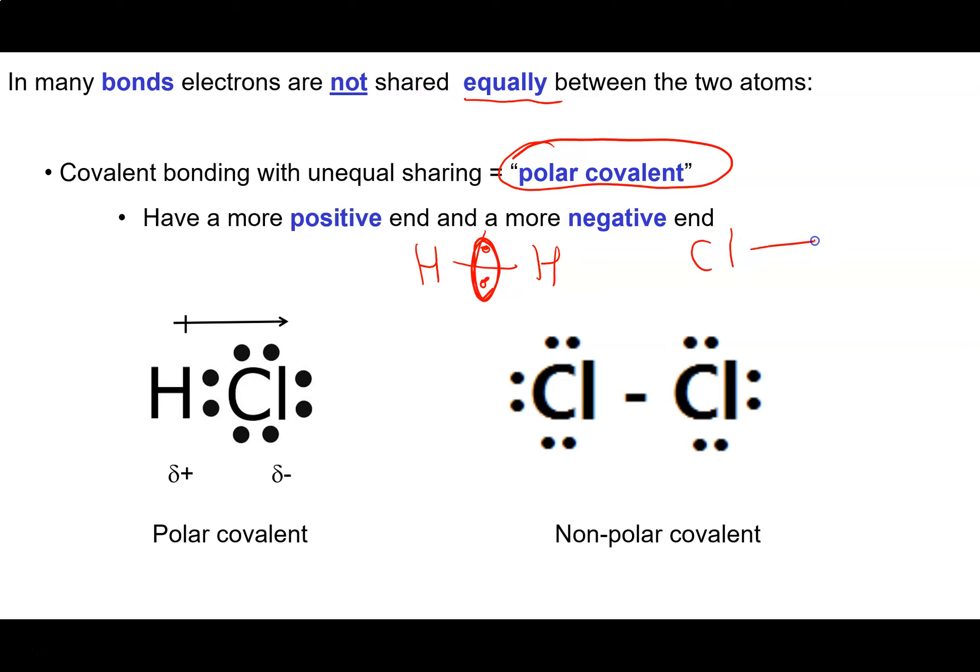A similar thing happens when I form a bond between two identical chlorine atoms. The electrons that are being shared don't have a greater attraction to one atom or the other, so they sit exactly halfway between the two atoms.